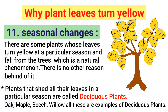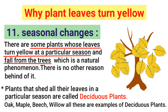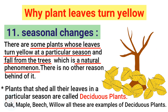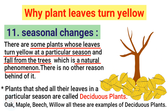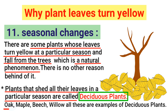Last but not least, seasonal changes. There are some plants whose leaves turn yellow at a particular season and fall from the trees, which is a natural phenomenon with no other reason behind it. Plants that shed all their leaves in a particular season are called deciduous plants. Oak, maple, beech, and willow are all examples of deciduous plants, as all their leaves fall off in certain seasons.